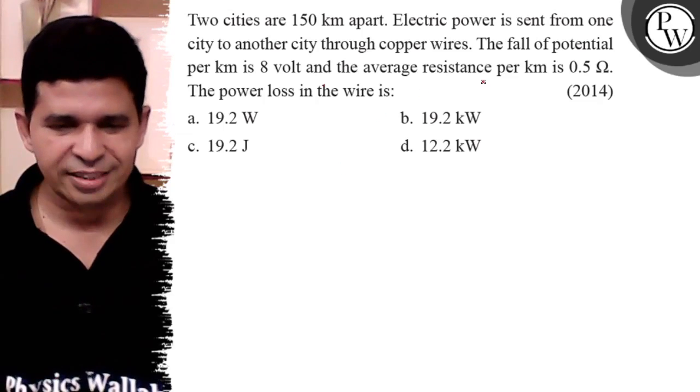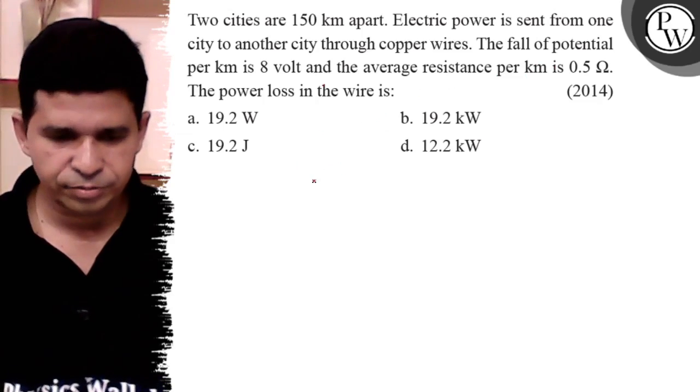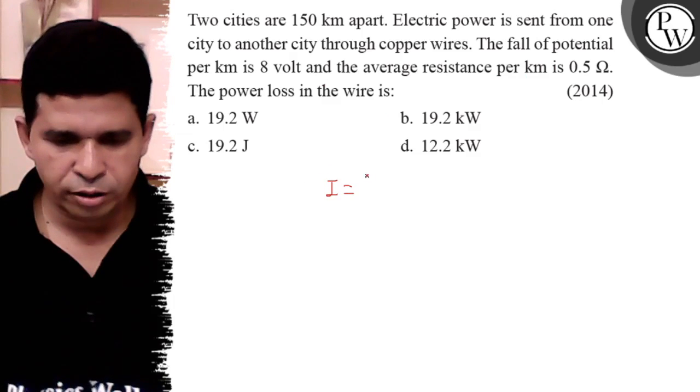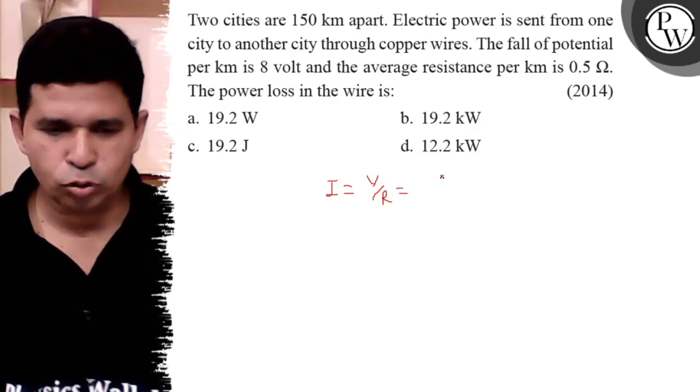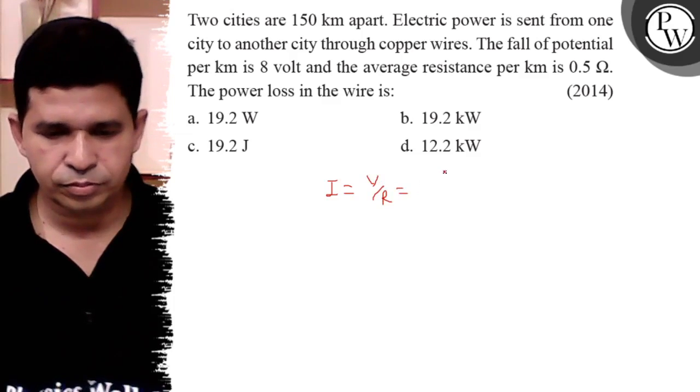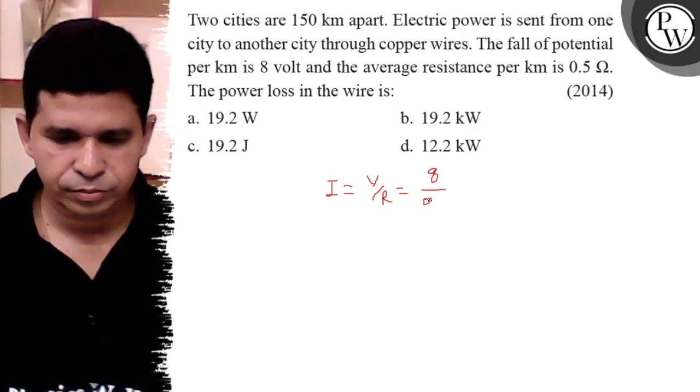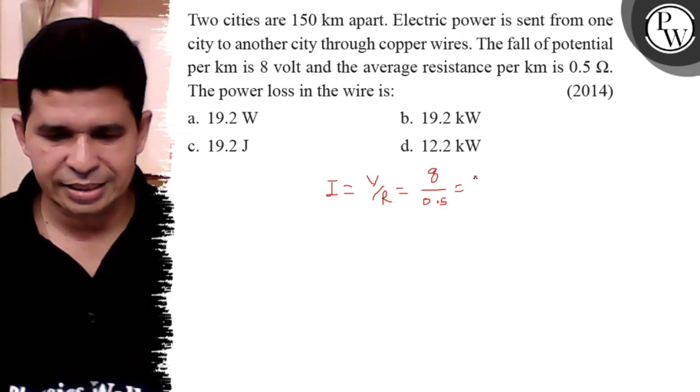We know that, what is the I? I is the V upon R per kilometer, so 8 upon 0.5, so it is 16.